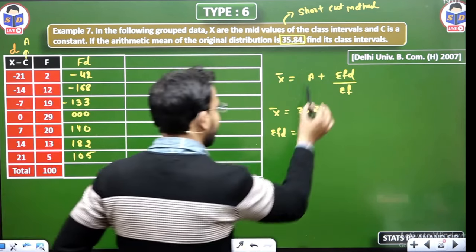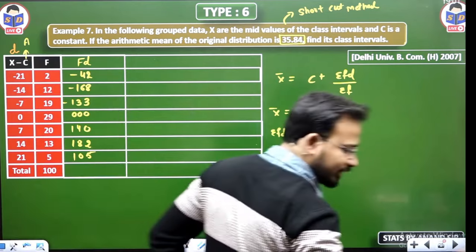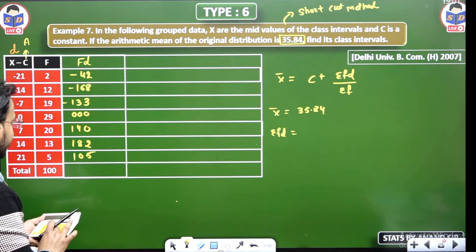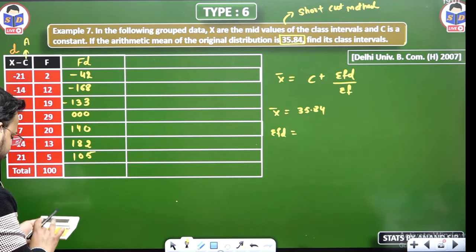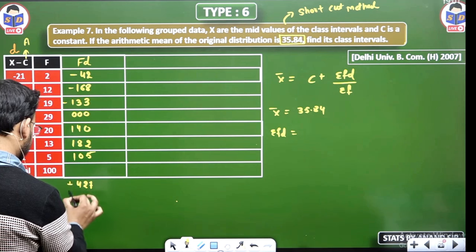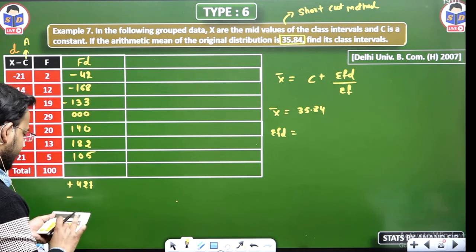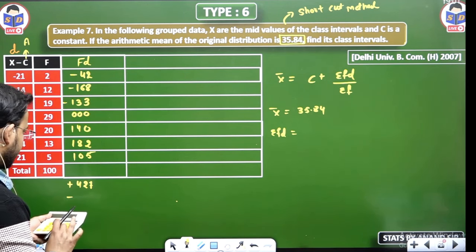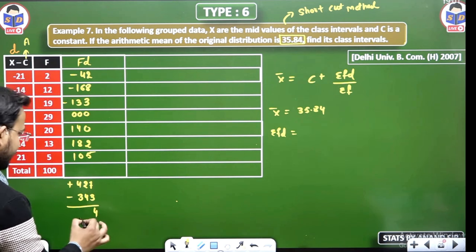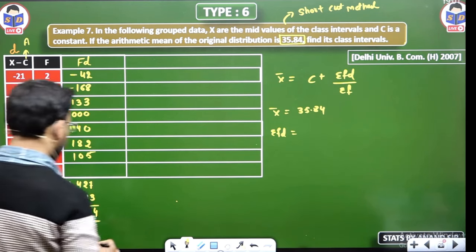Mean given is 35.84, and we have submission FD also. Submission FD, here A we are naming as C, so you can write this as C, no problem. Submission FD, submission FD you do, what is your result coming, first take positive numbers, 105, 105, plus 182, plus 140, 427. Minus 42, 168, plus 133. 343. 84.